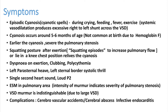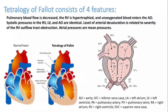Complications are important: patients can have infective endocarditis and cerebrovascular accidents. Looking at the anatomical picture, the four major problems are: overriding of the aorta, pulmonary stenosis, ventricular septal defect, and right ventricular hypertrophy. All of this leads to mixing of desaturated blood with normal blood, making it a cyanotic congenital heart disease.